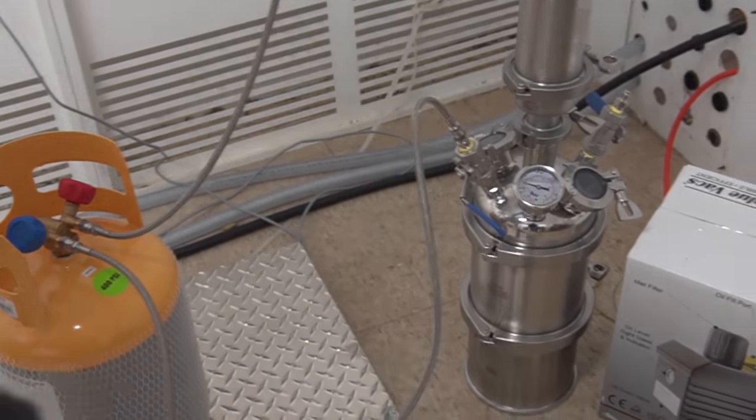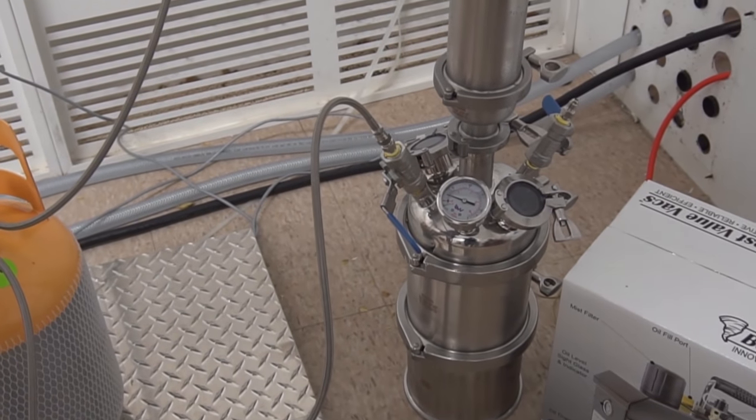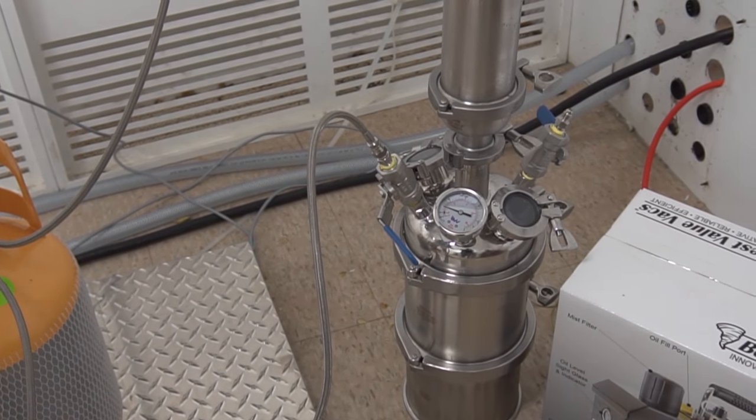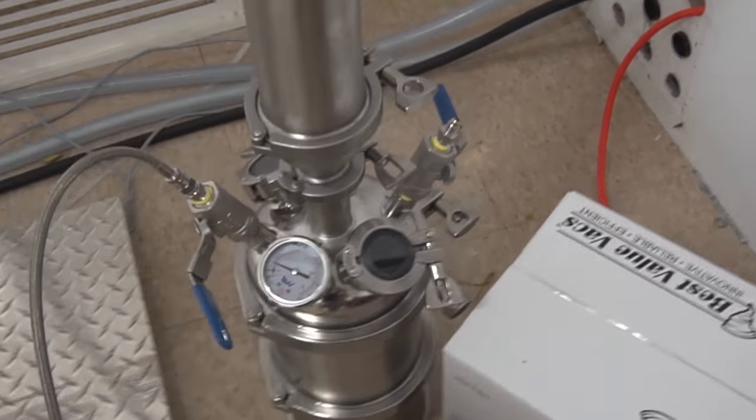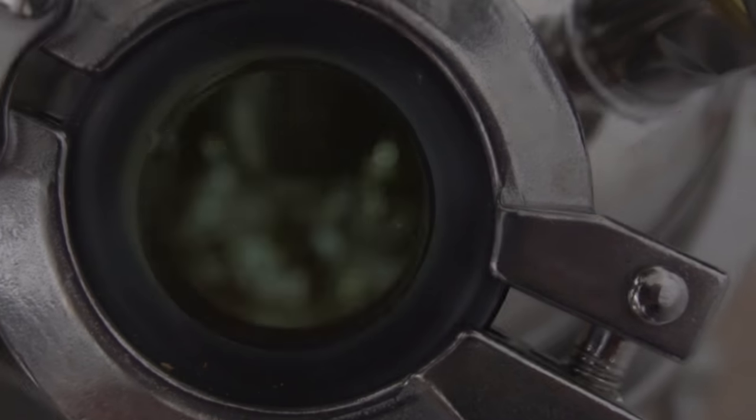So there you go. That's how you run an extractor. All the oil has been pushed through. We're going to get a little look inside the sight glass here. You can see that our oil resin is a mixture of our oil with butane still in it.